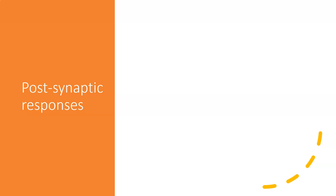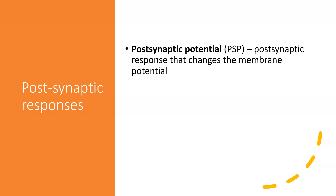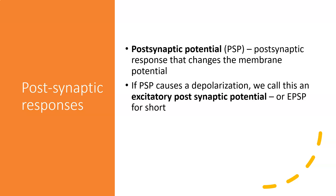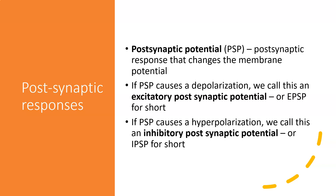We have a term to describe changes in the membrane potential as a result of neurotransmitters binding to the receptor in the postsynaptic cell. We call this a postsynaptic potential, or PSP for short. These potentials can either depolarize the membrane — which we call excitatory postsynaptic potentials, or EPSPs — or they can hyperpolarize the membrane, in which case they are called inhibitory postsynaptic potentials, or IPSPs.